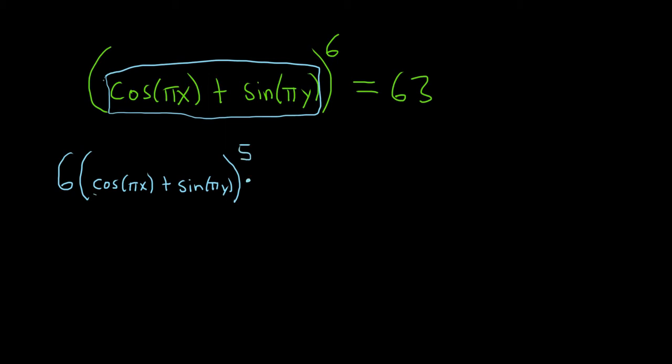The derivative of cosine is negative sine, so it'll be negative sine πx, and then chain rule times the derivative of the inside. So the derivative of πx is just π. That's because the derivative of x is 1.